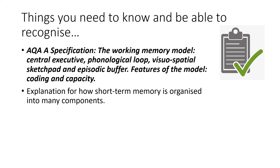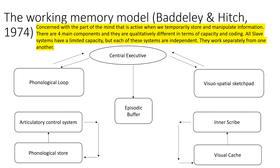The working memory model is an explanation for how short-term memory is organised into many components. It was put forward by Baddeley and Hitch in 1974 and is concerned with the part of the mind that is active when we temporarily store and manipulate information. There are four main components, qualitatively different in terms of capacity and coding: the central executive, phonological loop, visuospatial sketchpad and episodic buffer. Those latter three are known as slave systems - independent of one another - while the central executive is the boss.